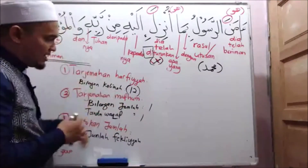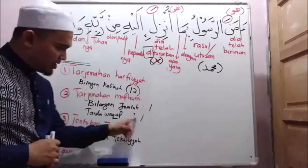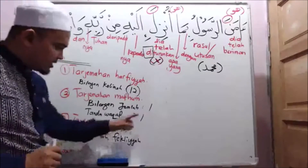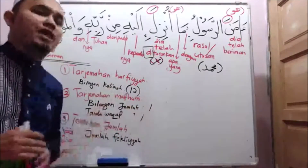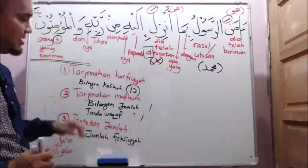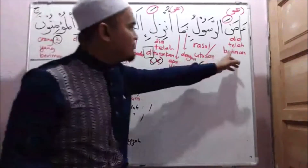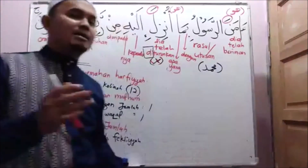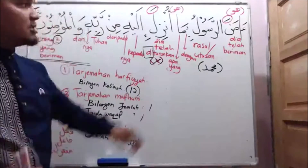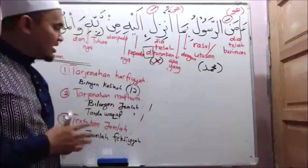Kita dah tahu ayat ini ada satu jumlah sahaja. Bermakna automatik kita dah dapat satu wakaf. Dan yang ketiga, kita wajib tentukan jumlah yang ada itu jumlah apa. Jadi, tuan-tuan dah kata jumlah yang kita bahaskan hari ini adalah jumlah fe'liah. Sebab terang-terang tuan-tuan nampak ayat kita dimulai dengan kalimah amanah. Amanah itu adalah kalimah fe'il madi, sebab hujungnya berbalik atas. Betul tuan-tuan dah belajar dengan saya.